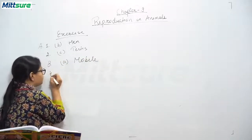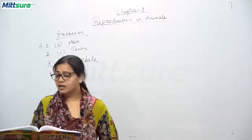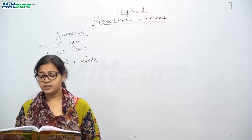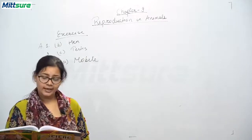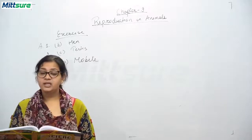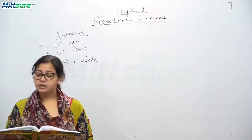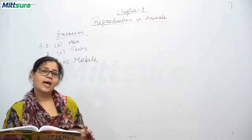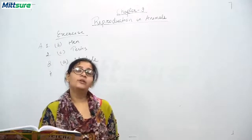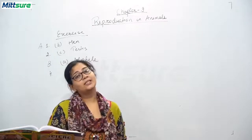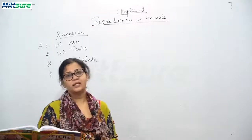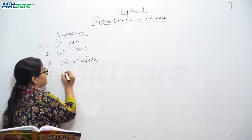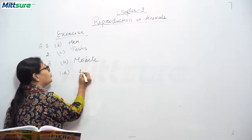Now fourth: the number of nuclei in a zygote is — a) one, b) three, c) two, and d) four. A zygote is a fully fertilized egg, and at that time it has one nucleus. So the answer is a) one.